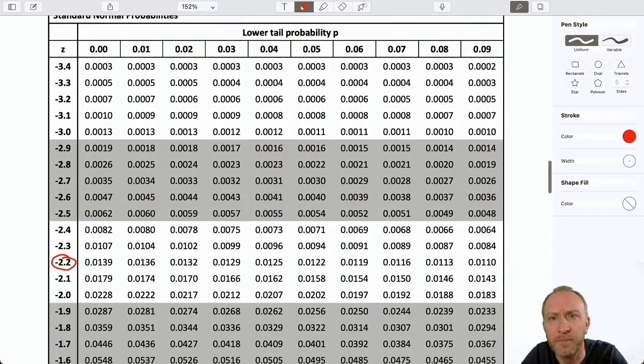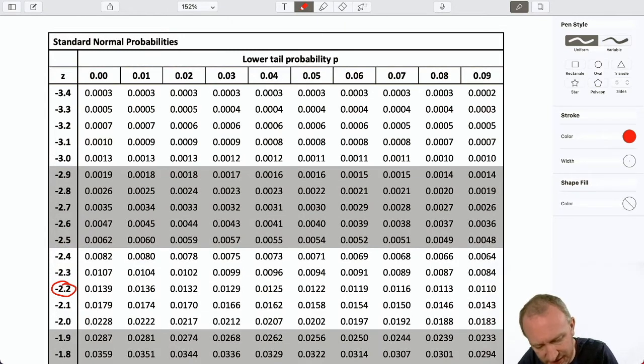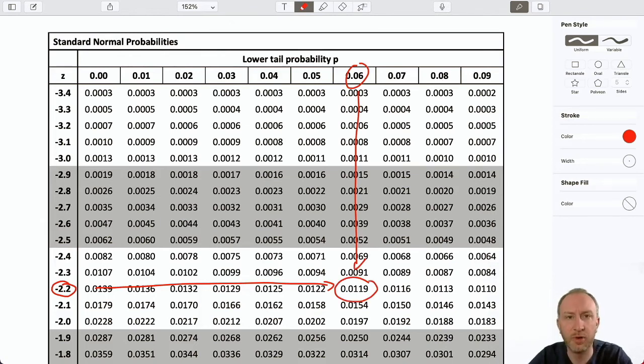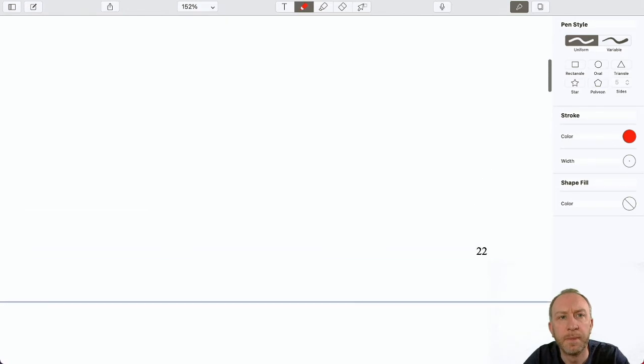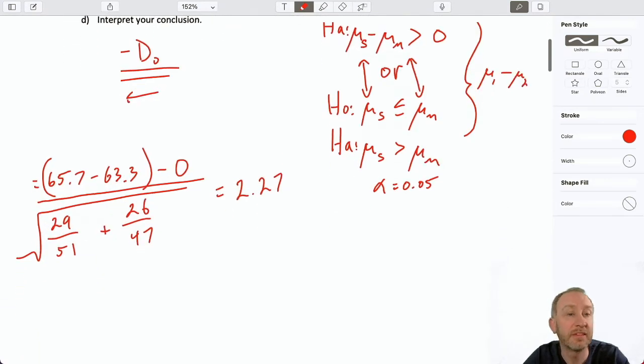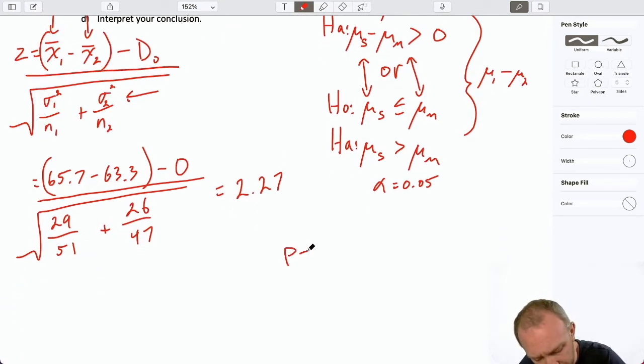We'll go through both here. So, 2.26. There we go. 0.0119. And this is a one-tail test. So, that is my p-value. 0.012. So, we have our p-value. Our critical value, we've seen this one so many times. Alpha divided by 2. We know that that's going to be 1.96.